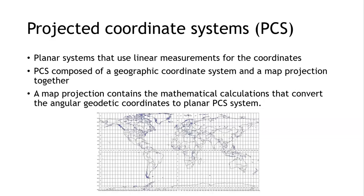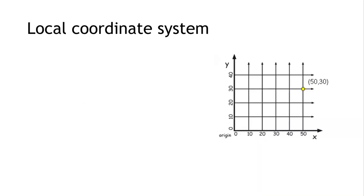They contain mathematical calculations that convert the angular geodetic coordinates to the planar PCS system—the one which you are possibly looking at in terms of a graph or chart. Here it represents the classical Universal Transverse Mercator system.